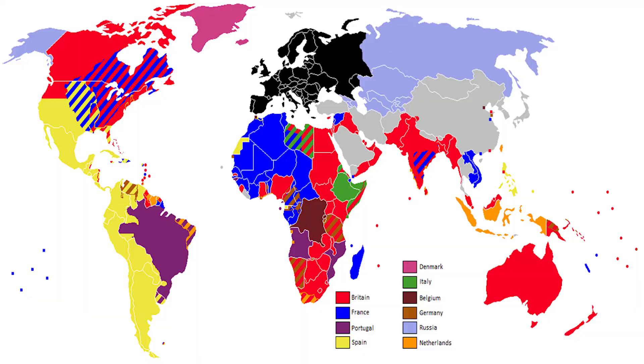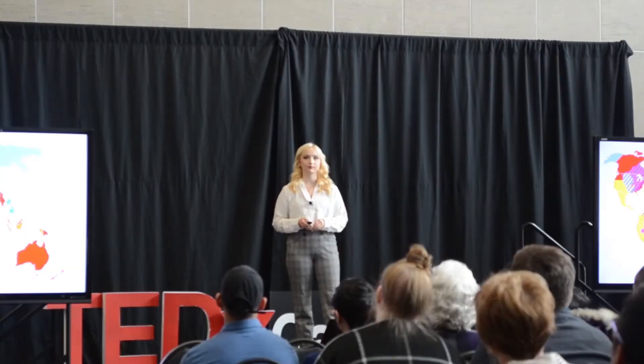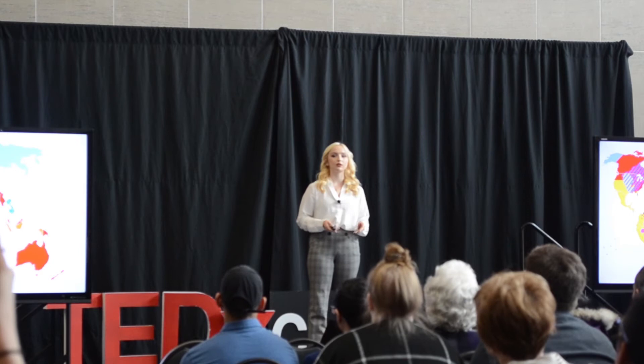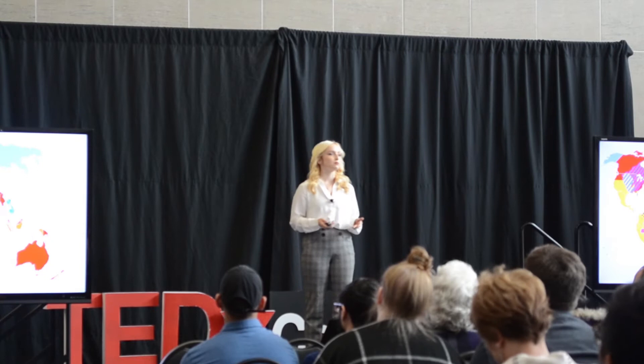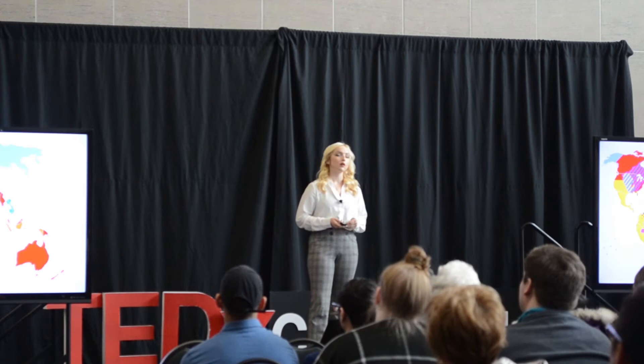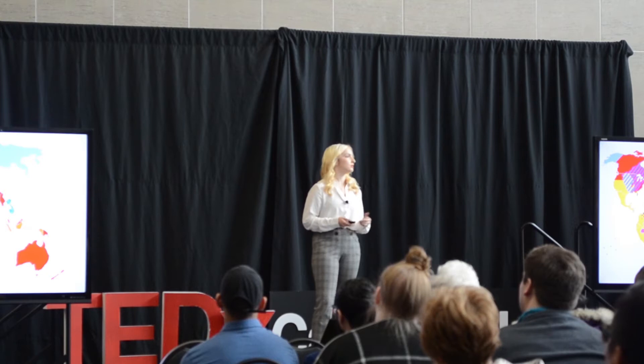Who do you think decides what is right and what is wrong? Because usually it's the people in power. Historically, this meant colonial and imperial powers — this could be the British in North America or the Dutch in South Africa. They overcome a smaller, less militarized group, and the language spoken by that smaller group often becomes what's called the minority language. The language spoken by those in power is called the majority language.